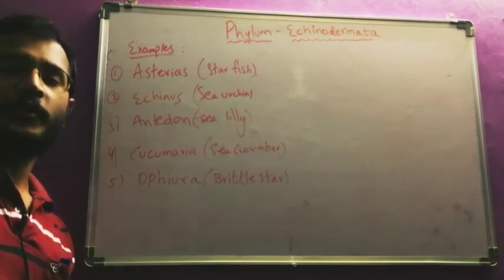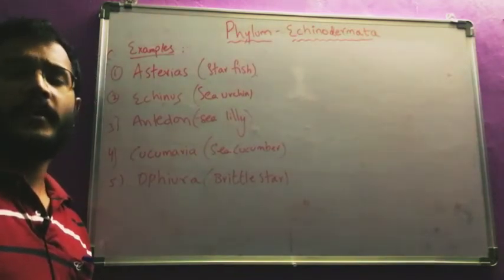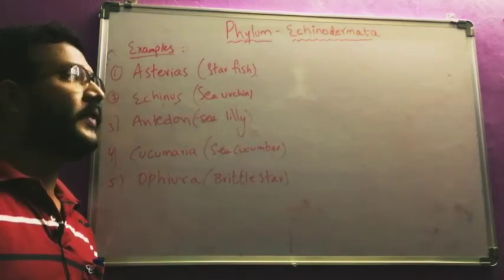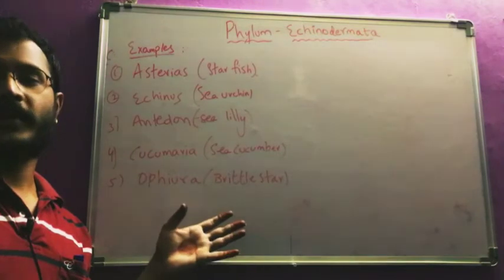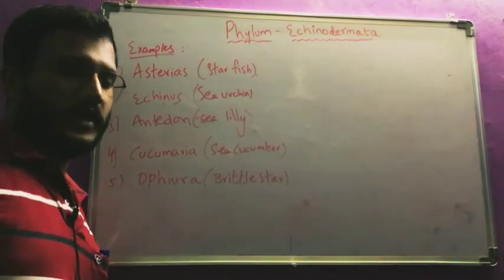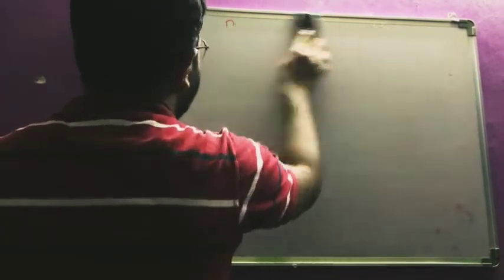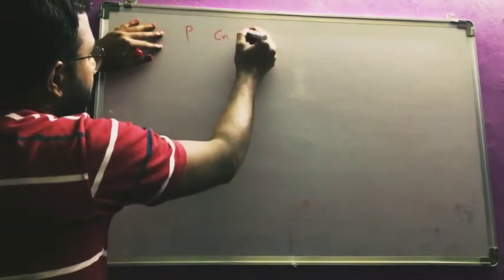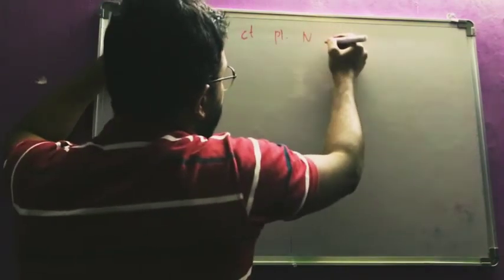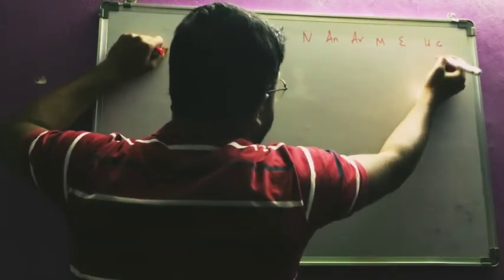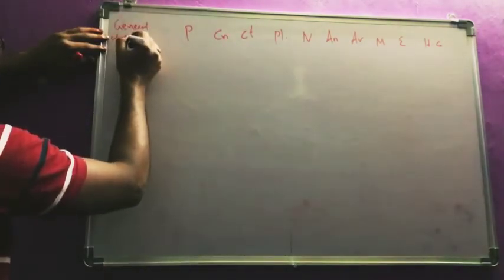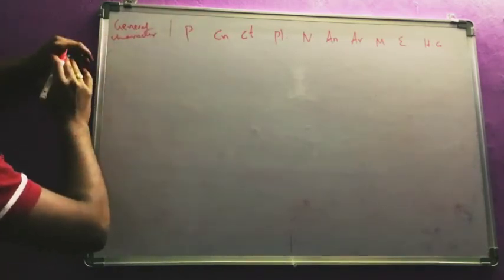I hope you have completed the chart work assigned previously. You have to maintain a comparison chart with all phyla — Porifera, Nidaria, Ctenophora, Platyhelminthes, Nematoda, Annelida, Arthropoda, Mollusca, Echinodermata, and Hemichordata — across the columns, and all general characters in the rows. Take a big size paper, not A4; fill in all the general characters for Echinodermata today and send it to me on WhatsApp.